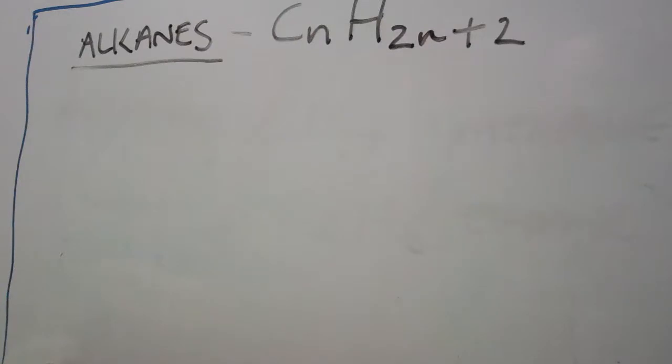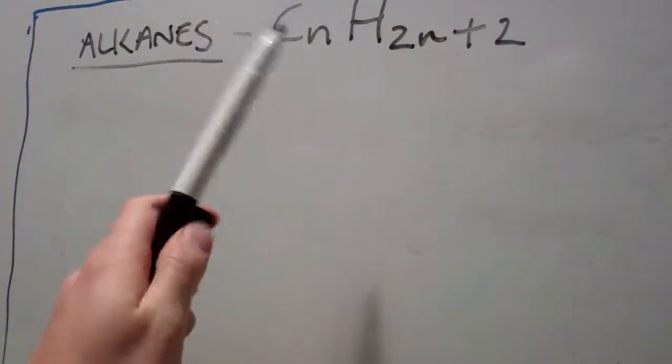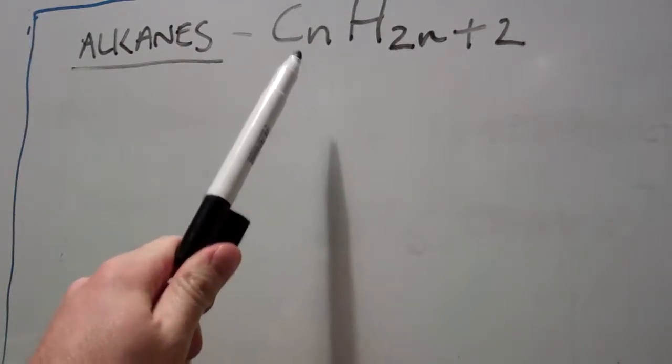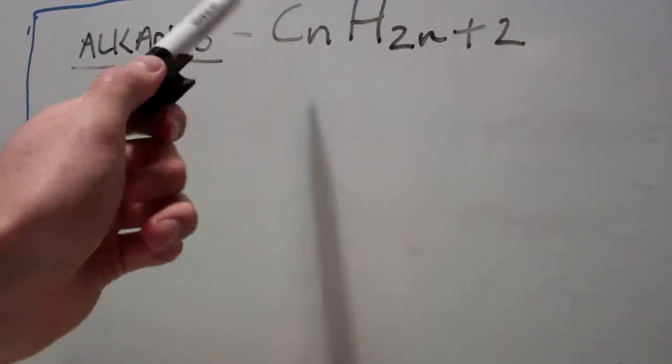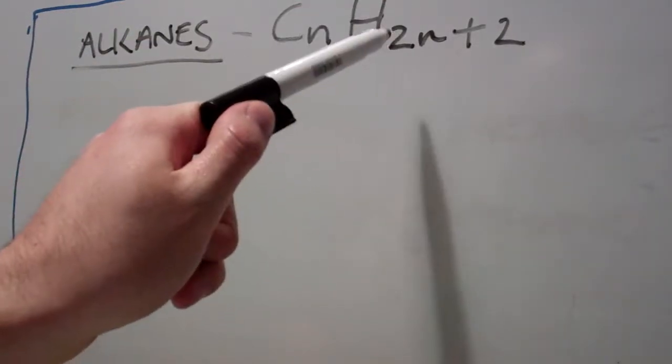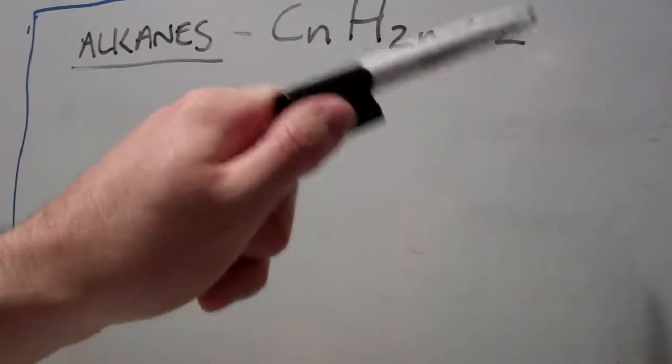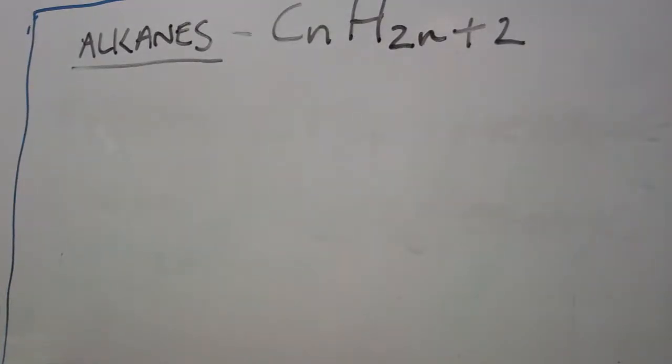Howdy folks. We're going to start off by looking at the hydrocarbons, which are molecules that consist of carbon and hydrogen. Funny that. The most simple form of hydrocarbons are the alkanes, and they follow this formula here: CnH2n+2. So if you've got one carbon, you would have 2 times 1 is 2, plus 2 is 4 hydrogens. Just a quick recap.